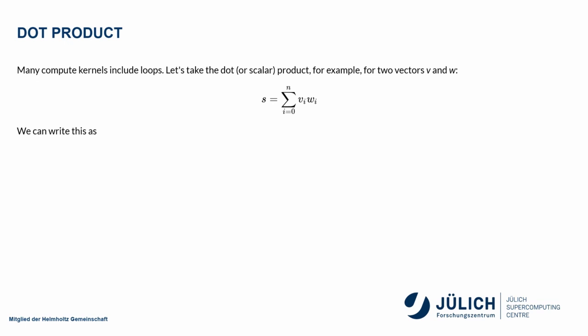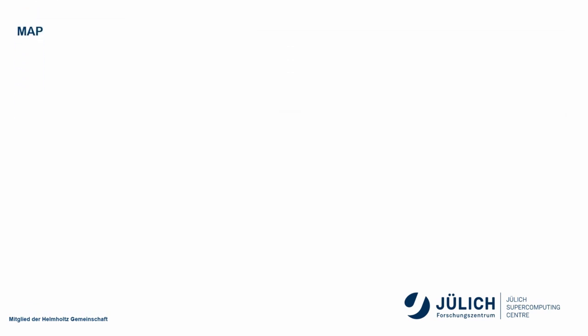This can actually be expressed in a couple of patterns. We could write this as Python code with a loop over all the elements. I can also express this as a map. What does a map do? A map applies an operation to each element.